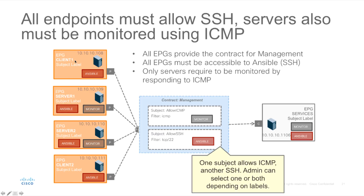In this case, let's imagine that all EPGs must be able to provide SSH so that our Ansible tool can be used for configuring these servers. However, we will only be monitoring keepalives — sending pings to check the servers, not the clients. So it's a simple example showing a contract called management with two subjects, ICMP and Allow SSH, where the servers consume both labels whereas the clients only use the Ansible label.